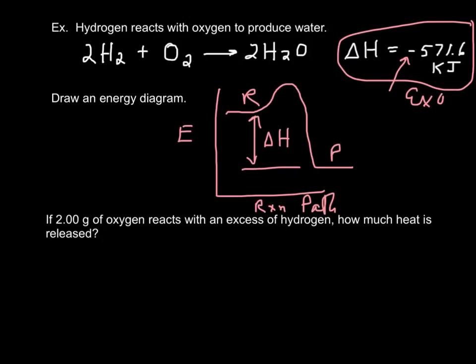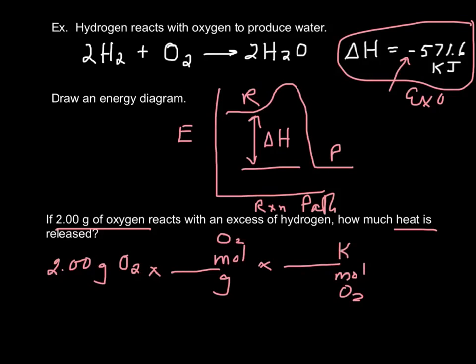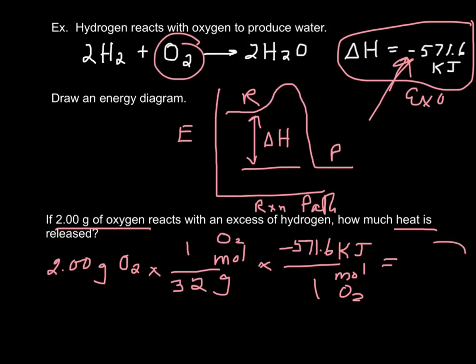So if 2 grams of oxygen reacts with an excess of hydrogen, how much heat is released? Well, it's just stoichiometry. So I'm going to start with 2 grams of oxygen, and I'm going to change grams to moles of oxygen. And then I'm going to change moles of oxygen to kilojoules. I know 1 mole of oxygen is 32 grams. And I know that from my equation, 1 mole of oxygen releases 571.6. And I will let you figure out what that equals because I didn't do it ahead of time. And that's really all there is to thermochemical equations.